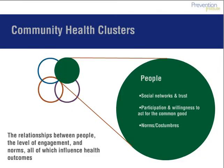The next set of factors are within the people cluster. These factors describe the social and cultural environment of a community. Healthy and safe standards for behavior, willingness to act for the common good, and trust among neighbors fall within this cluster. These factors are particularly important for the long-term improvement of health and safety in historically disenfranchised communities. Let's look at an example from Stamford, Connecticut, that addresses social networks and trust in the people cluster.